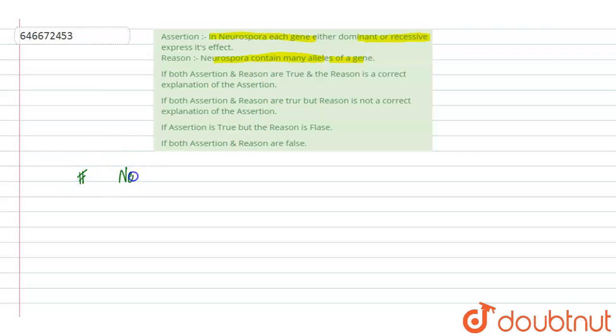If we talk about Neurospora, in this haploid set of chromosomes are present. It exists as a haploid organism. It is a haploid organism with a single set of chromosomes, so it means each gene is controlled by a single allele because there is no diploid content.